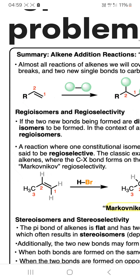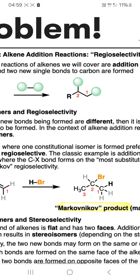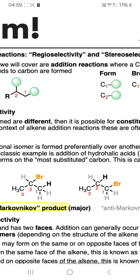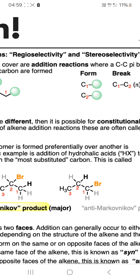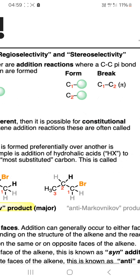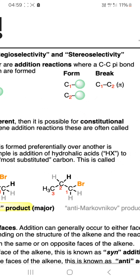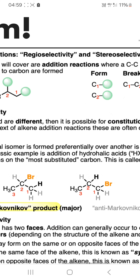See the example. New bonds form at C1 and C2, and the C1-C2 pi bond breaks.